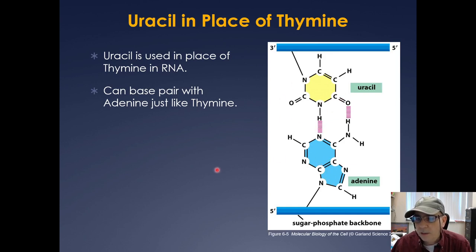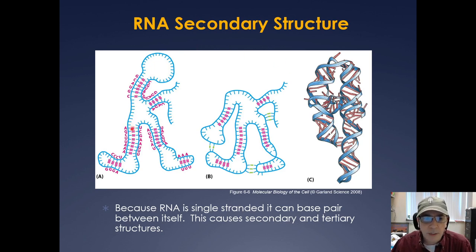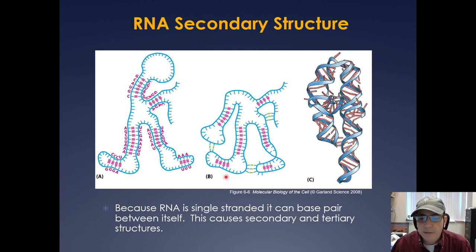RNA is single-stranded, and because these bases all like to base pair — just like DNA — RNA oftentimes takes on a secondary structure where you have hydrogen bonding between a lot of the bases. We'll see this again with ribosomal RNAs, tRNAs, and other RNAs. In general, RNAs like to hydrogen bond among themselves, causing RNAs to have both a secondary and a tertiary structure. A's base pair with U's, and G's still base pair with C's.